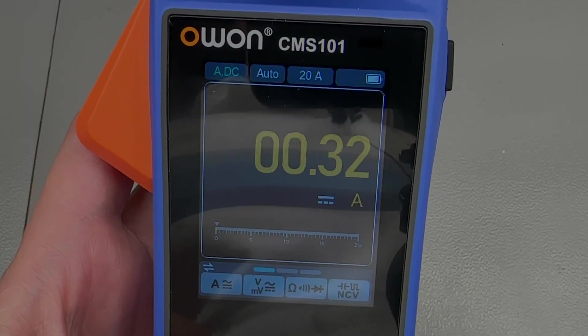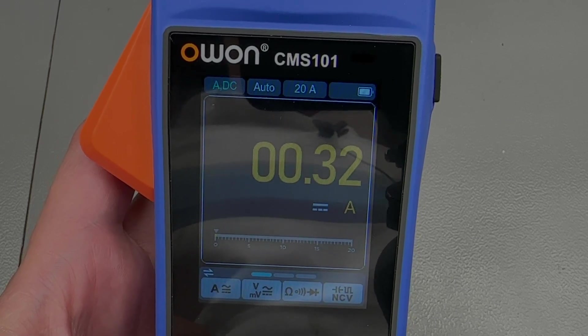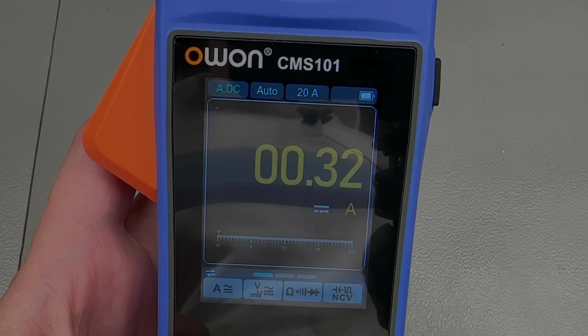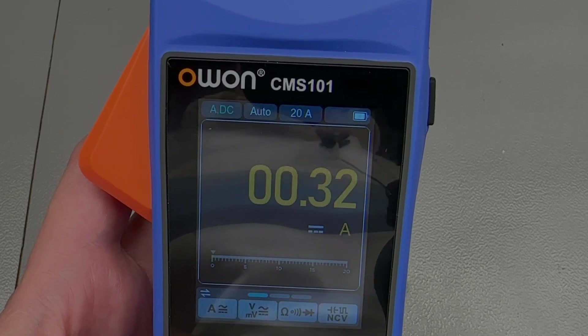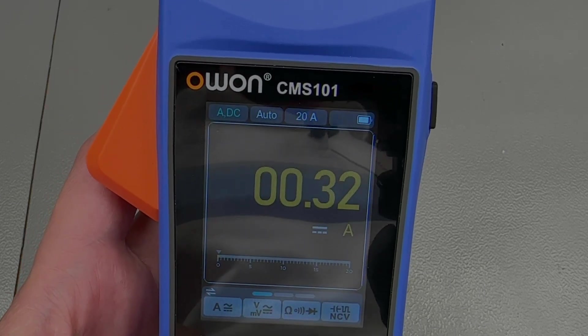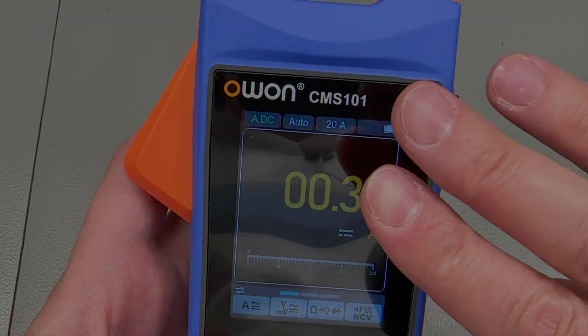So if I was to sum this up, on the plus side we have some decent build quality inside and outside, and the capability to do easy data logging over Bluetooth for voltage and current, plus the additional resistance, capacitance, diode, continuity measurements, all in one with the clamp meter.